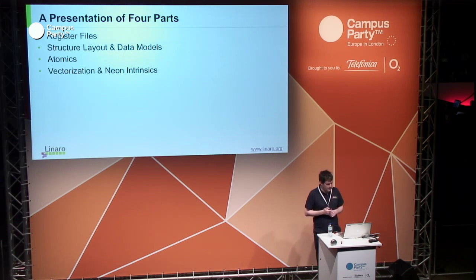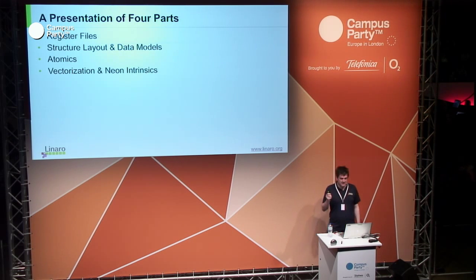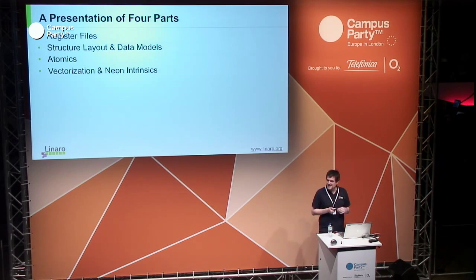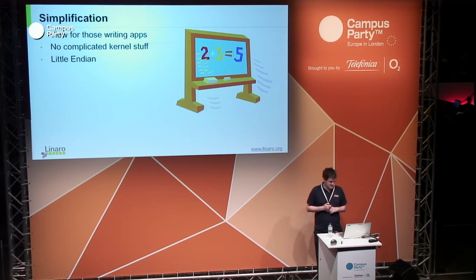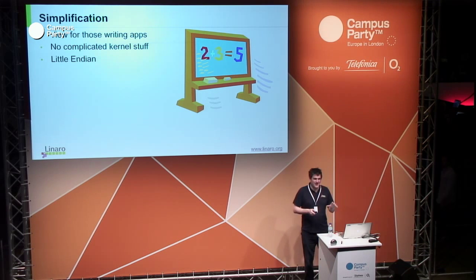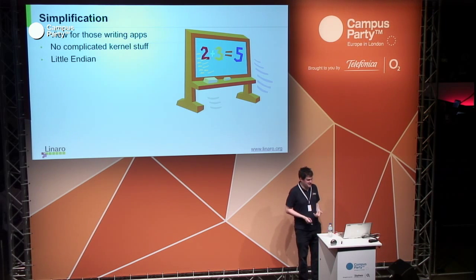This presentation has four parts. I'm going to talk about register files, structure layout and data models, atomics, and vectorization and something called Neon intrinsics. I hope to talk for about 45 minutes. There'll be a Q&A session at the end. There are some notes: this is a gross simplification. I'm not going to say anything that's wrong, but I'm talking about people writing code for apps, not anything complicated in the kernel. I'm talking about little endian only, not big endian. If you have questions, do ask at the end.